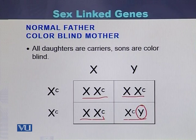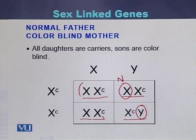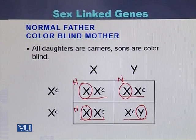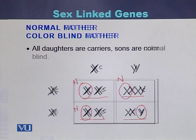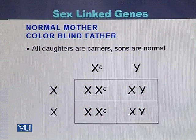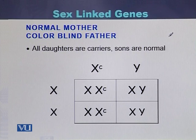The three daughters will be carriers because they have a normal allele on the other X chromosome. Each daughter's second X chromosome contains a normal allele, so the daughters will be carriers and will not express the disease, while the sons will be color blind. In the case where the mother is normal and the father is color blind, all the daughters will be carriers and the sons will be normal.